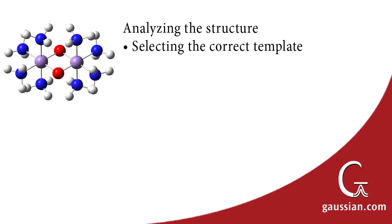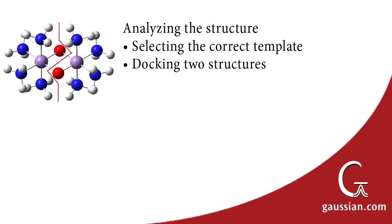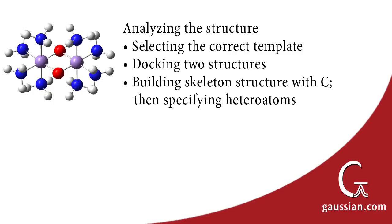First, selecting the right template will make building easier. We will start with a manganese atom having six bonds, and also use the tetrahedral carbon template when building what will ultimately be the NH3 groups. Second, since the molecule consists of two identical fragments, we will build it using the fragment docking technique demonstrated earlier. Third, we will build the overall skeleton using carbon atoms, specifying nitrogens later. Finally, we will make extensive use of the point group symmetry feature to create the proper symmetry in the molecular structure.